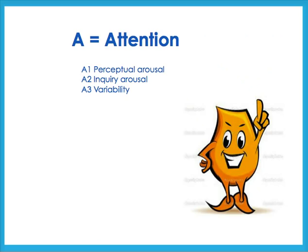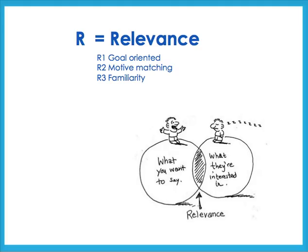Attention refers to perceptual arousal — it stimulates the senses. Inquiry arousal stimulates thinking. Variability uses a range of different teaching methods. Relevance tends to be goal-oriented and focuses on what the learner wants to achieve. Motive matching aligns with the learner's basic motivations. Familiarity uses and builds recognition.